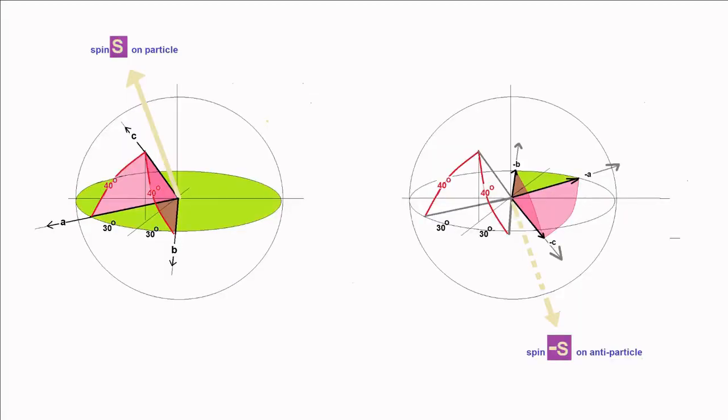So applying this to the angles a,c, c,b and a,b, where angles a,c and c,b both equal 40 degrees and angle a,b equals 60 degrees, we get the following result.